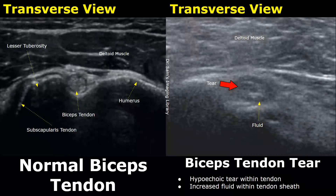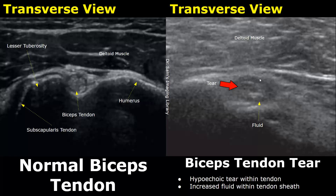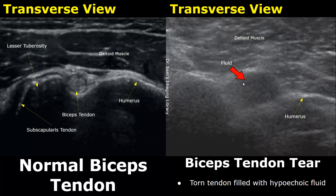Here is an image of a biceps tendon tear. It looks similar to tenosynovitis — we can find a hypoechoic tear within the tendon and also increased fluid within the tendon sheath. Here is another image of a biceps tendon tear where the torn tendon is completely filled with hypoechoic fluid, which may indicate a complete biceps tendon tear.